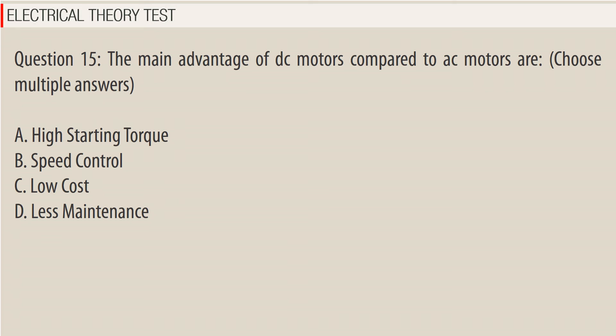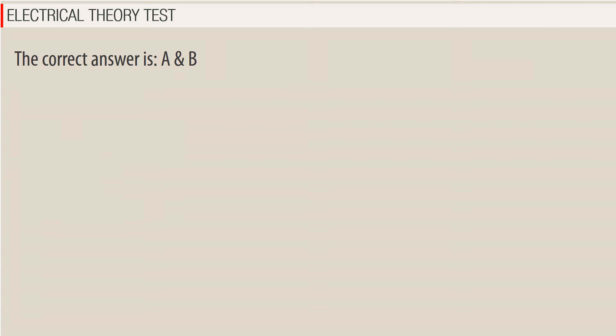Question 15: The main advantage of DC motors compared to AC motors — choose multiple answers. A. High starting torque, B. Speed control, C. Low cost, D. Less maintenance. The correct answer is A and B.